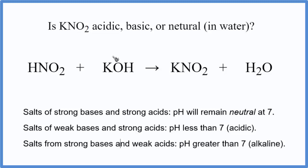To figure that out, we need to know the neutralization reaction that produced the potassium nitrite here. If we add HNO2 plus KOH, we will end up with KNO2, there's our potassium nitrite, and water.